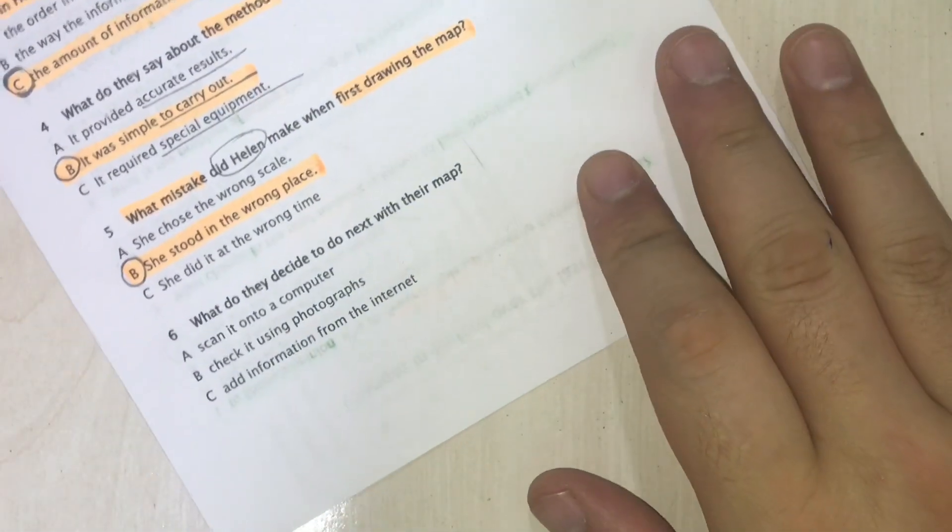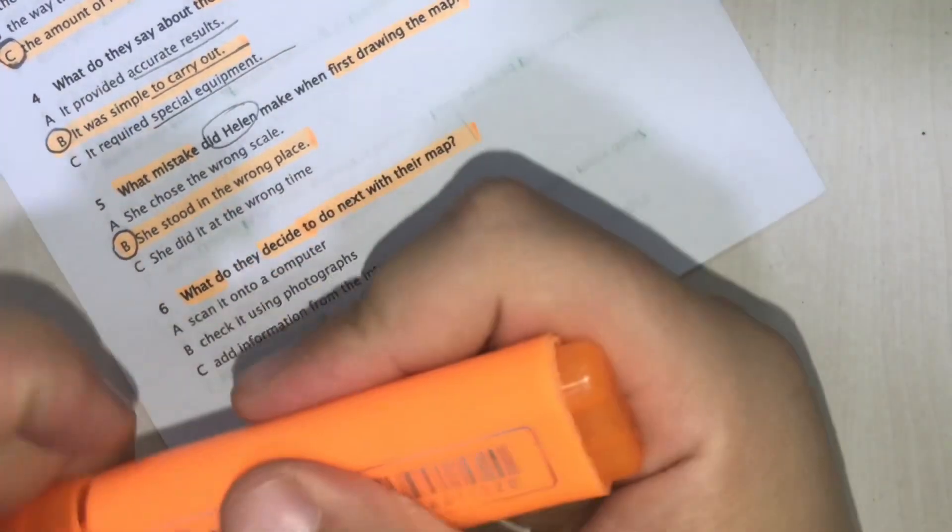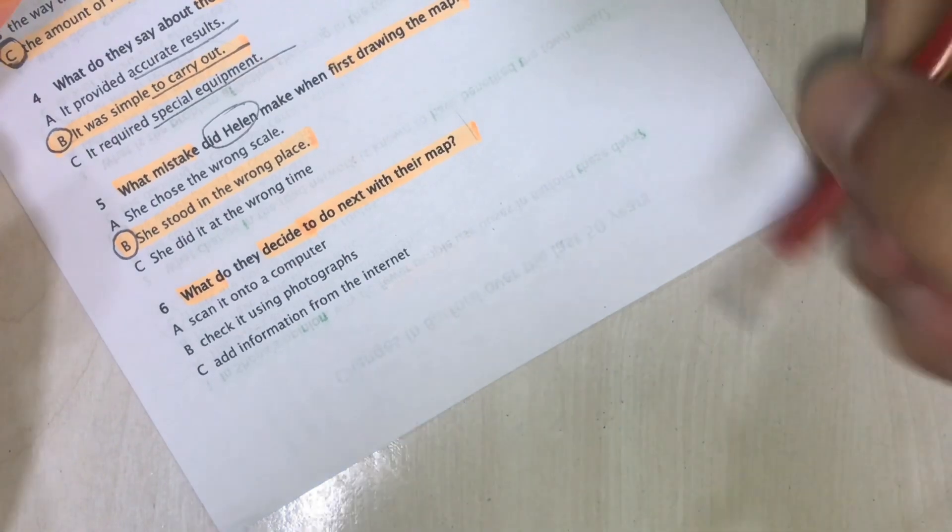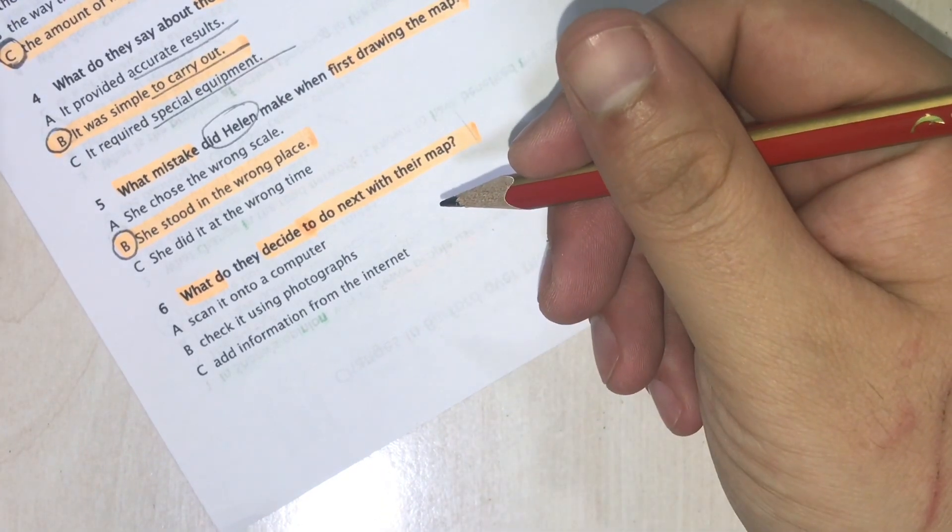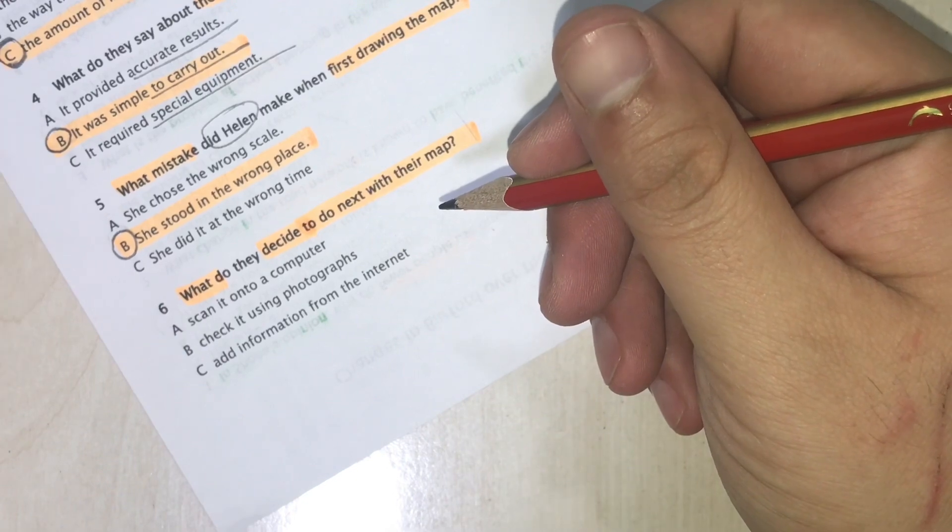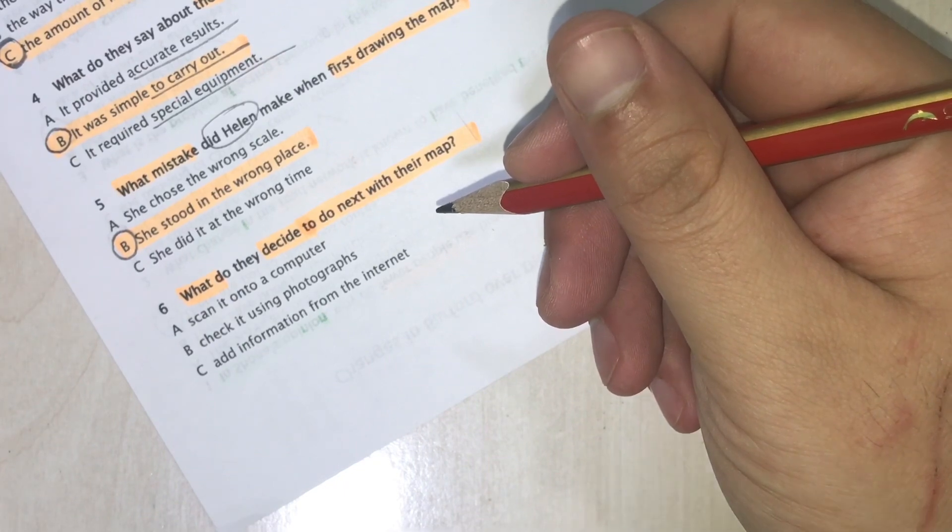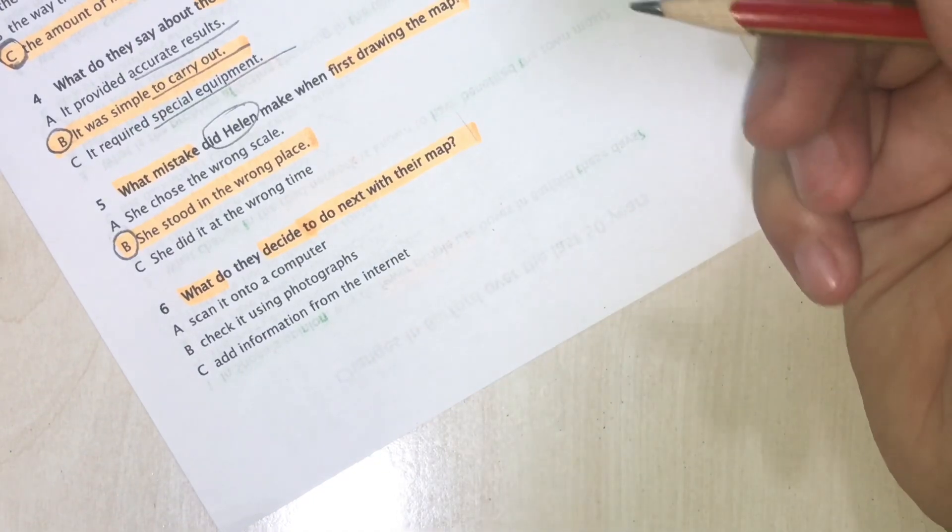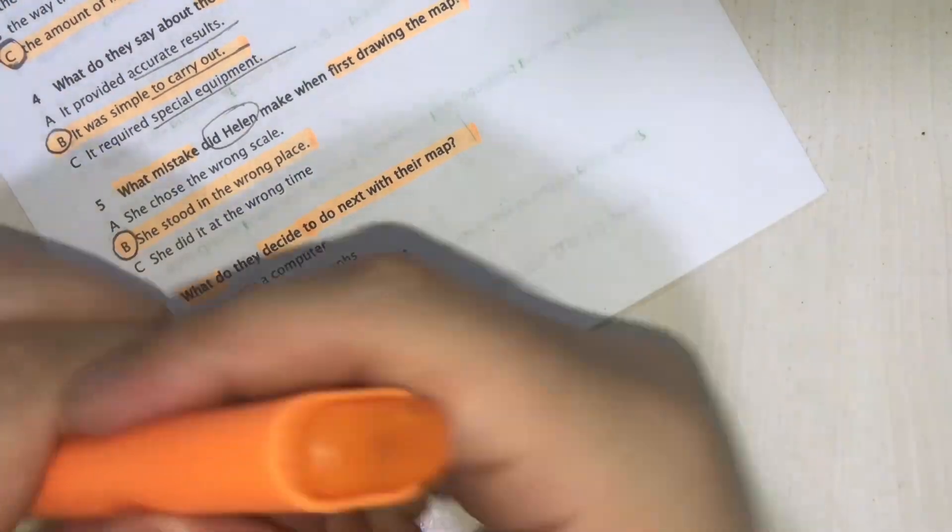Question 6: What did they decide to do next with their map? Audio: 'I was drawing it all to scale. We could get a map of the region off the internet.' 'I couldn't find anything, but you took some pictures didn't you?' 'Yeah, I'll email you them if you want.' 'I'll make my amendments using those, then I can scan it into our report.' They talk about the pictures and using these pictures on the project for the next part. Instead of pictures, we have here the word photographs, so the answer is B.